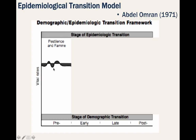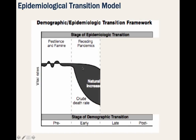At Stage 1, you have the age of pestilence and famine, where mortality is high and fluctuating, precluding sustained population growth, with low and variable life expectancy. Stage 2 is the age of receding pandemics, where mortality progressively declines, with the rate of decline accelerating as epidemic peaks decrease in frequency. At this stage, average life expectancy increases steadily, and population growth is sustained and begins to become exponential.